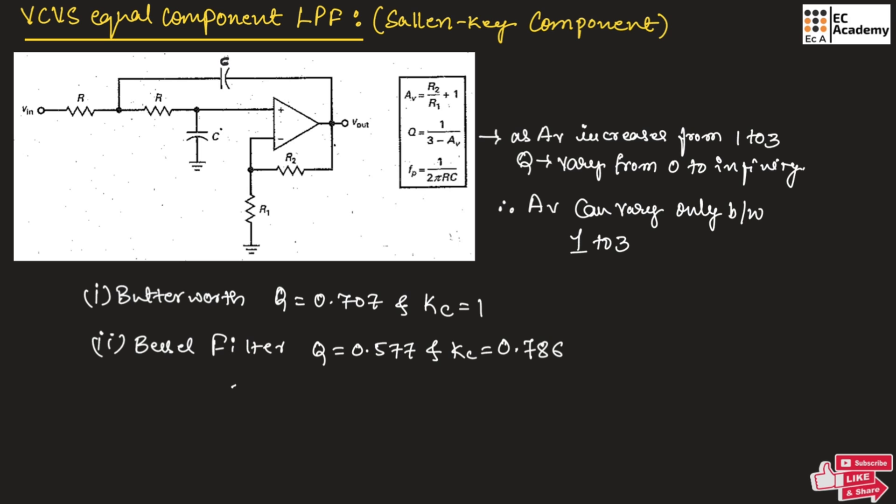For both the filters, the cutoff frequency can be written as Kc into Fb. This is the cutoff frequency for both Butterworth and Bessel filter.